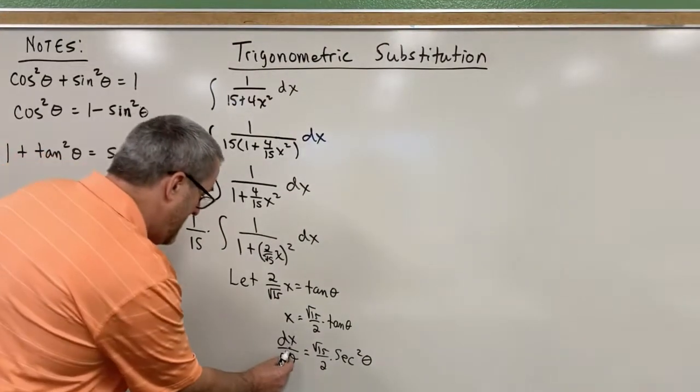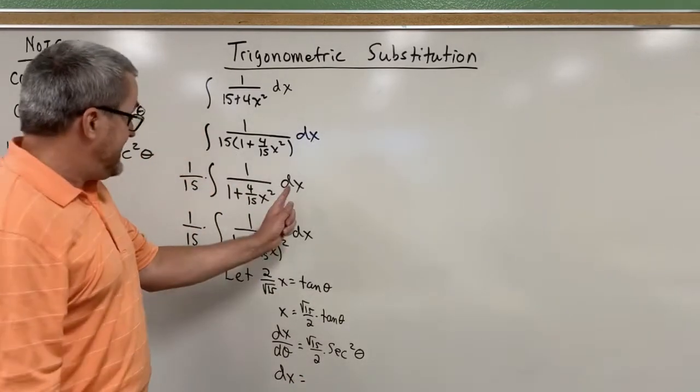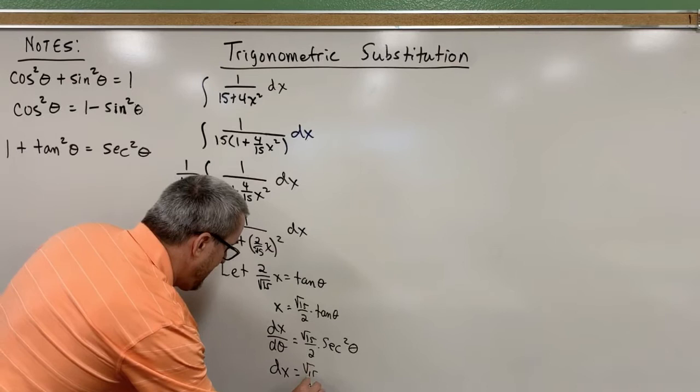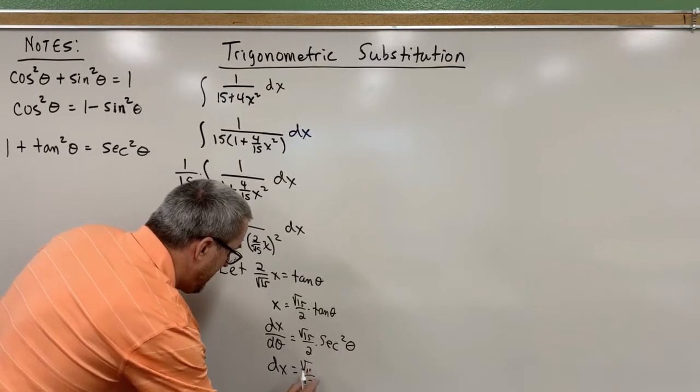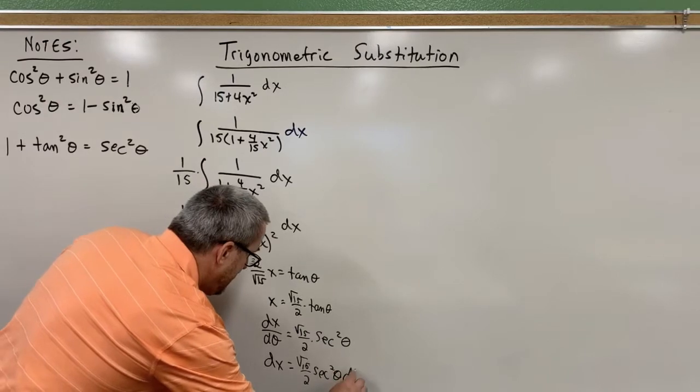And then just one more move, let's multiply the d theta over, so we'll make a final claim that that dx is going to be the same as the square root of 15 over 2, let me make that odd later, secant squared of theta d theta.